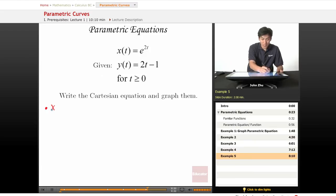One, solve for t. x equals e to the 2t. So if we take the natural log of both sides, this term will cancel out. So we have t equals ln of x over 2.